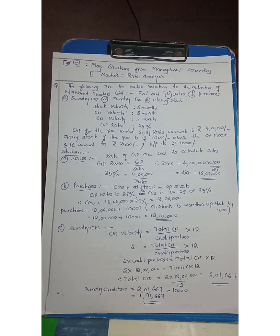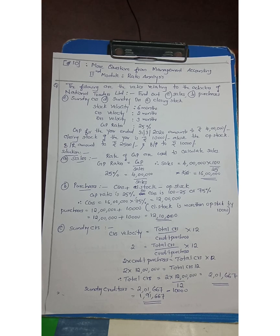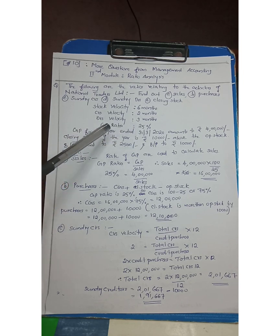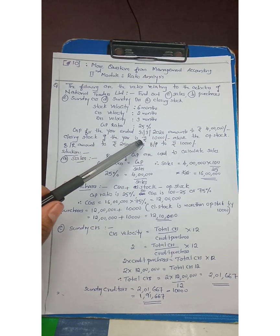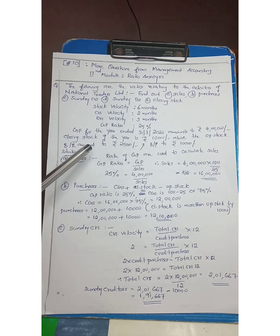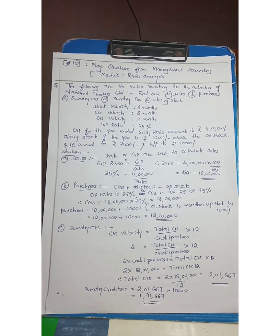The following are the ratios relating to the activities of National Traders Limited. Find out its sales, purchases, sundry creditors, sundry debtors, and closing stocks. By using this information, how will you arrive at the value of sales, purchases, sundry creditors, sundry debtors, and closing stocks?